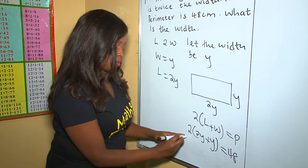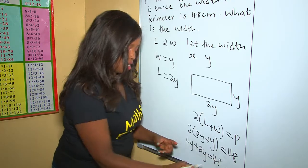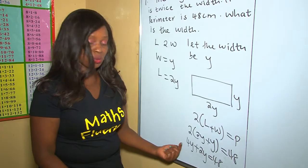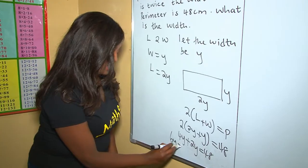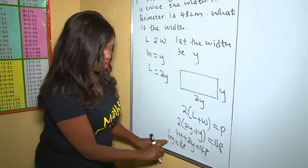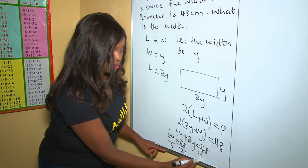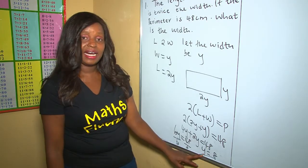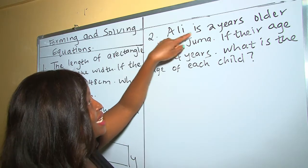We remove the brackets: 2 times 2y is 4y, plus 2y equals 48. Since 4y and 2y are like terms, we combine them: 6y = 48. We want the value of y, so we divide both sides by 6. Therefore y = 48 ÷ 6, which gives us y = 8.